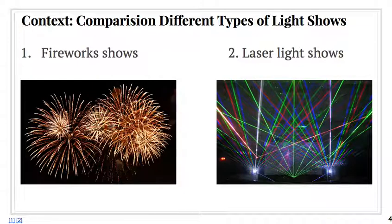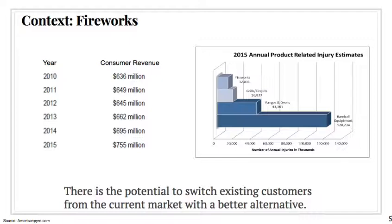We need to also understand that there are different types of light shows and the context behind them as well. We're focusing on fireworks and laser light shows. For fireworks, in 2010, there was a consumer revenue of about $636 million, and that number actually increased to $755 million in 2015. The tradeoff here is that fireworks were the fourth largest injury in terms of annual injuries in 2015, with 12,000 injuries. We believe there's potential to switch existing market customers from the current market with a better alternative.